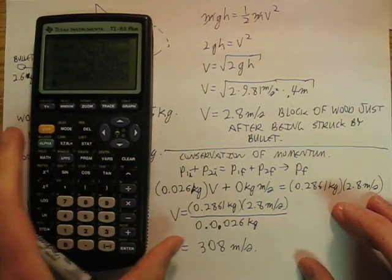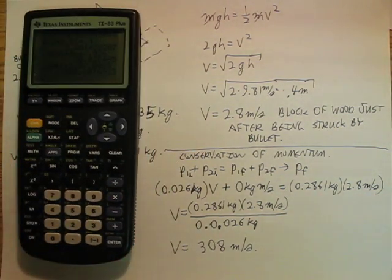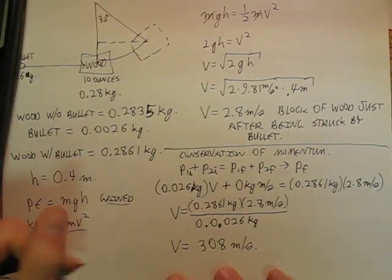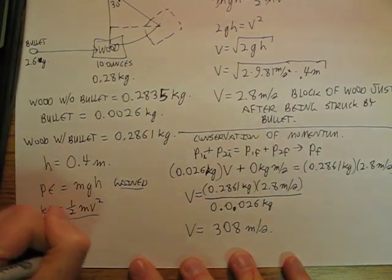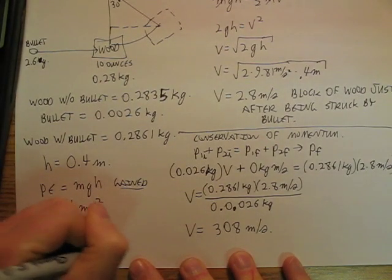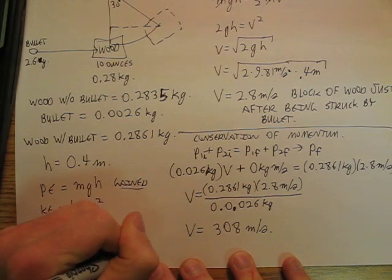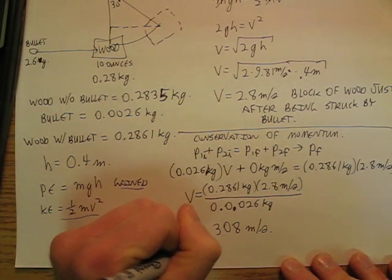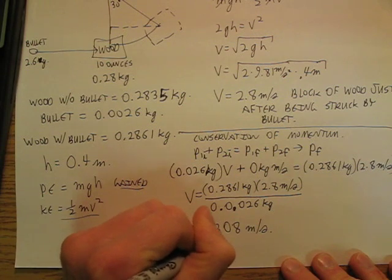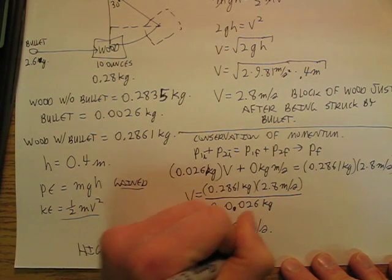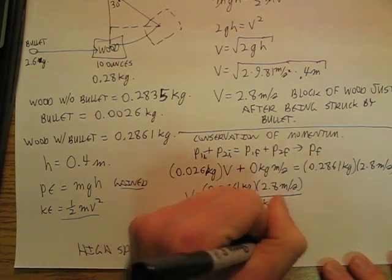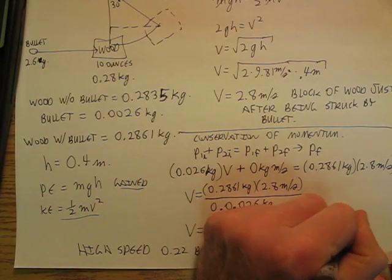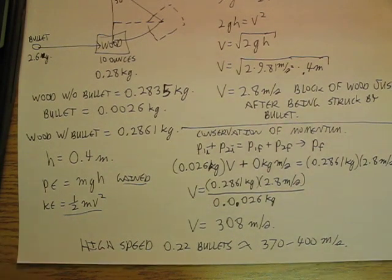Now, if you look on the internet, it said that high-speed .22 bullets are about 370 to 400 meters per second. And he was shooting out of a pistol.